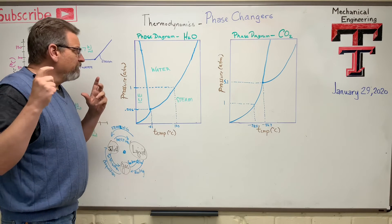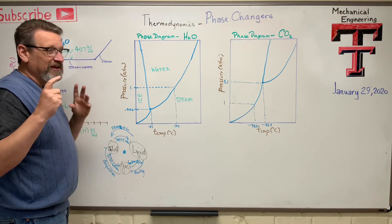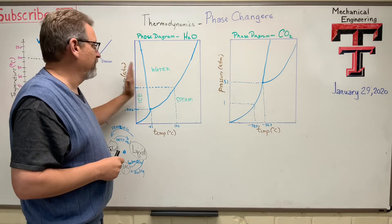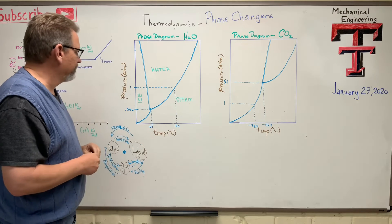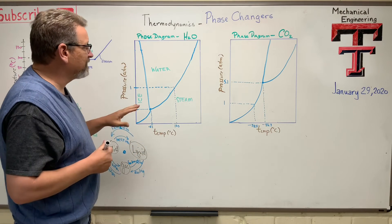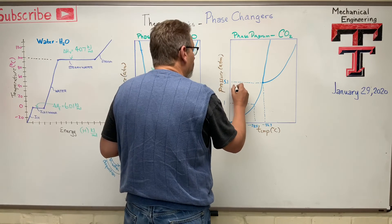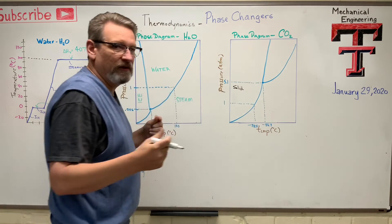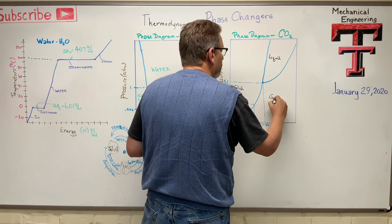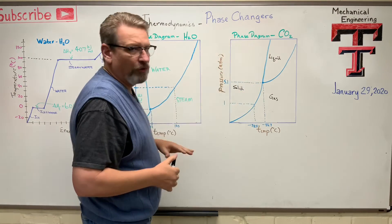Let's talk about phase diagrams. I have one for water and one for CO2. They're very similar but different. On one axis I have pressure in atmospheres, and on the other axis temperature in degrees C. As pressure and temperature change, you move through stages of solid, liquid, and gas. For CO2, the solid form is dry ice, and it can also have all three states of matter.